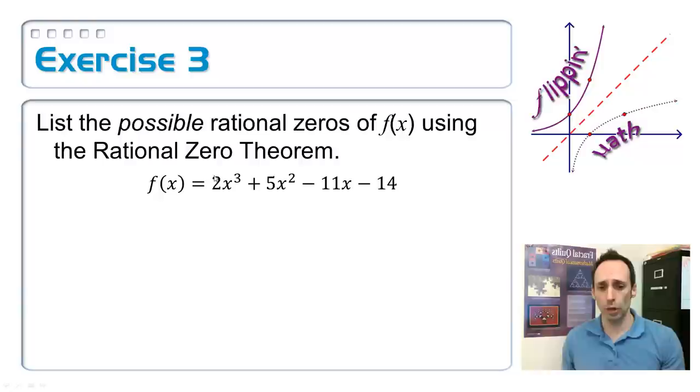So on this next one, I've got a leading coefficient of 2. I'd recommend just right beside that 2, my factors are 1 and 2. And my factors of the 14 are 1, 2, 7, and 14. Divide them out. Which ones goes on top? The factors of 14.